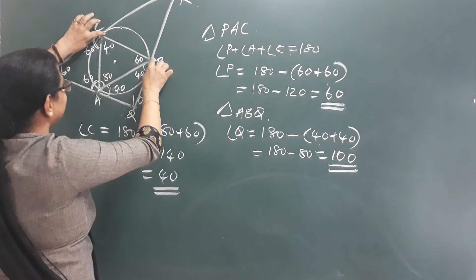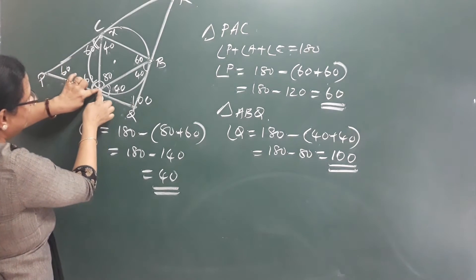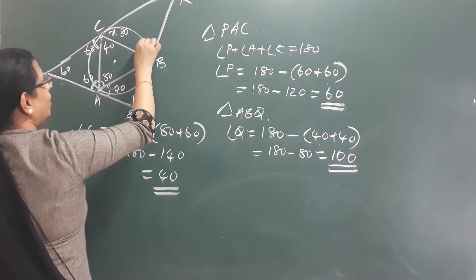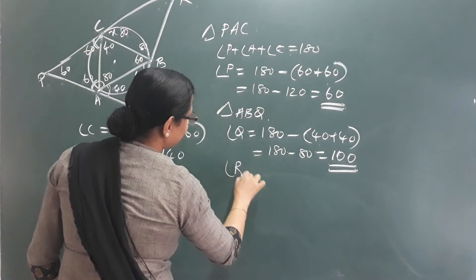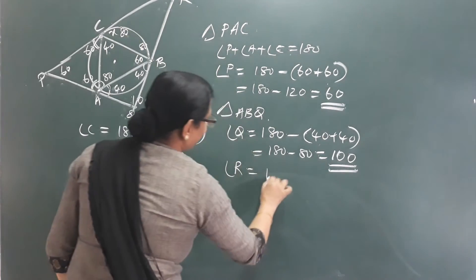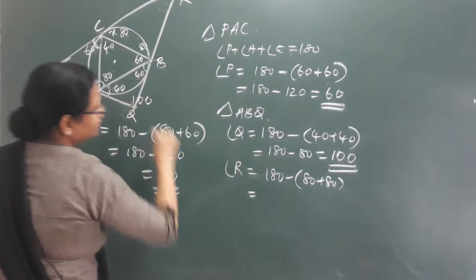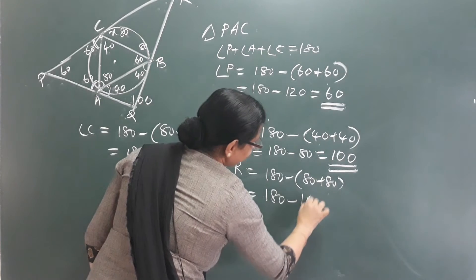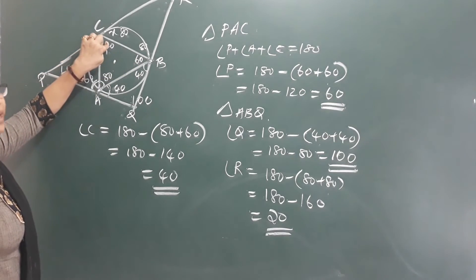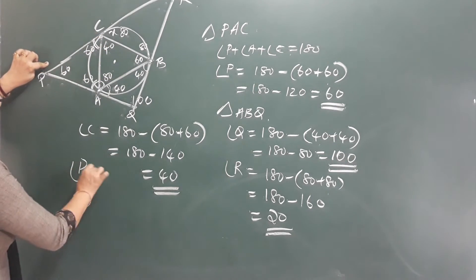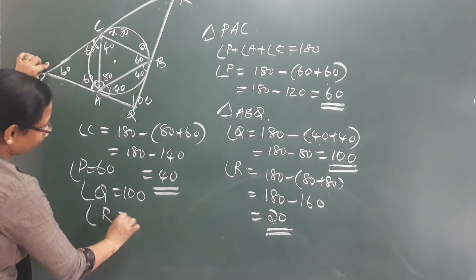This angle is BC as chord. The endpoint here is 80 and here is 80. Angle R is 180 minus (80 plus 80), that is 180 minus 160, that is equal to 20. So for triangle PQR: angle P is equal to 60, angle Q is equal to 100, angle R is equal to 20.